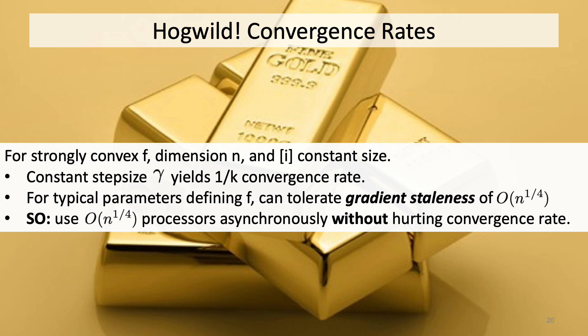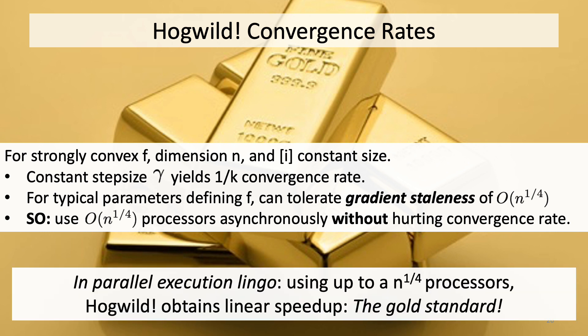Several papers found other less restrictive conditions under which speedup could be achieved. Essentially, we showed that as long as the number of processors p is small with respect to the dimension of the problem n, then the convergence rate would only be a constant factor worse. Although the updates were a constant factor slower, there were p operations taking place each time step — that is, a time step was potentially p times faster. Said in the language of parallel processing, hog wild was getting nearly linear speedups in these cases, which is the holy grail.